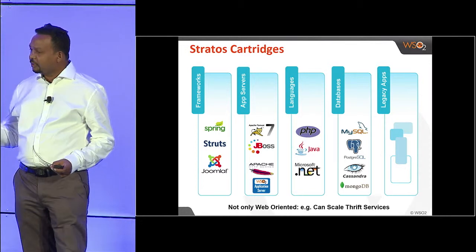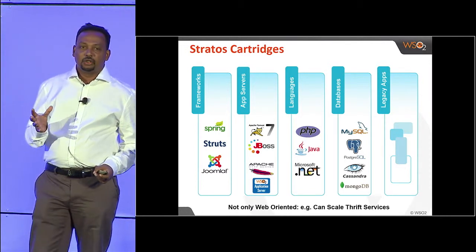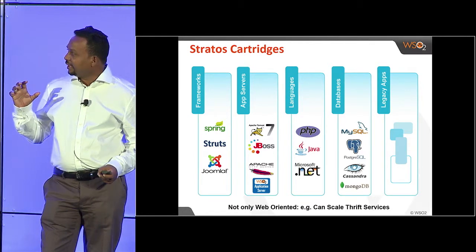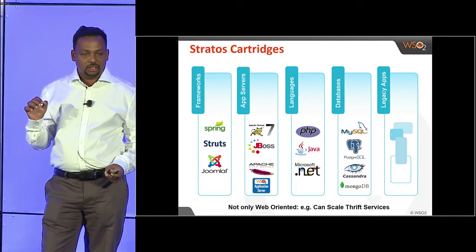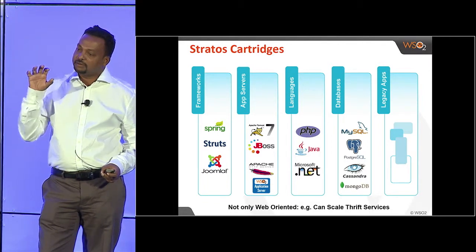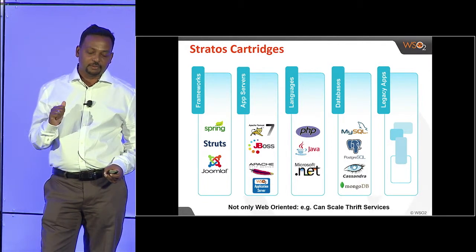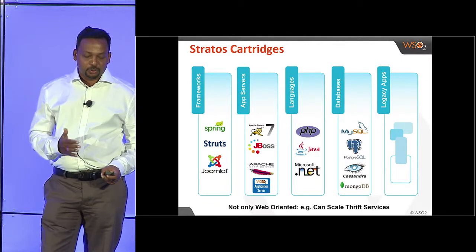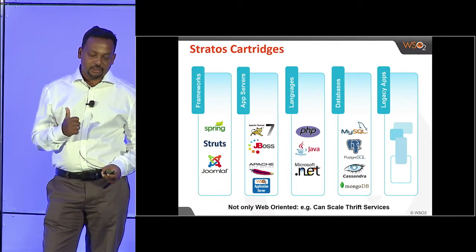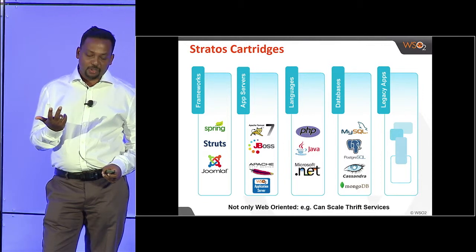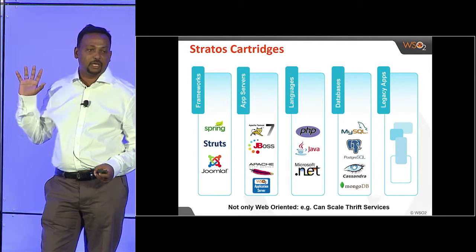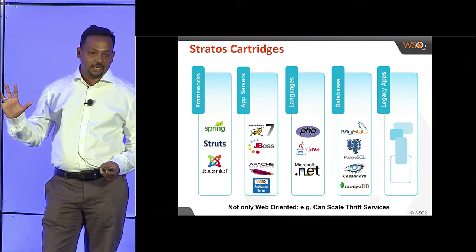The beauty of Apache Stratos is that it has something called the cartridge model, where you can add new types of services into your platform. Some examples are frameworks, application servers, programming languages, databases — and the design is such that you can even bring in legacy applications.